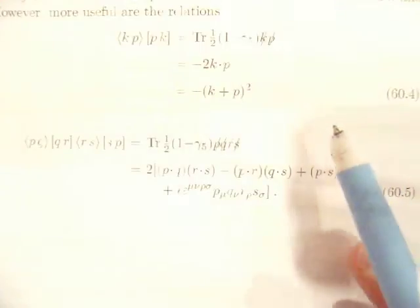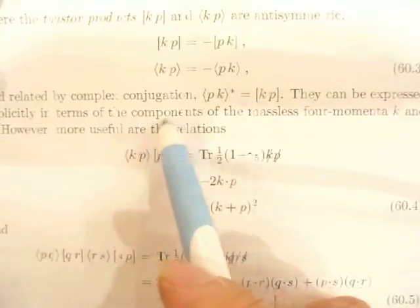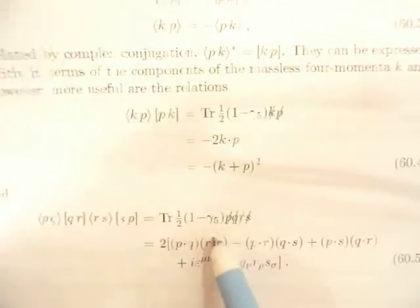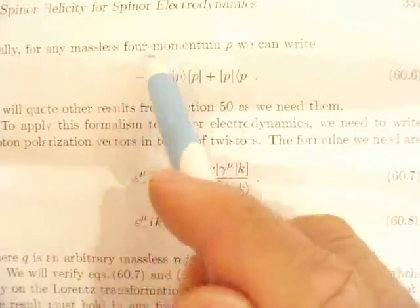Twister program related to complex conjugation. We can express the component method. Use cooperation. Spinor electrodynamics final method format.